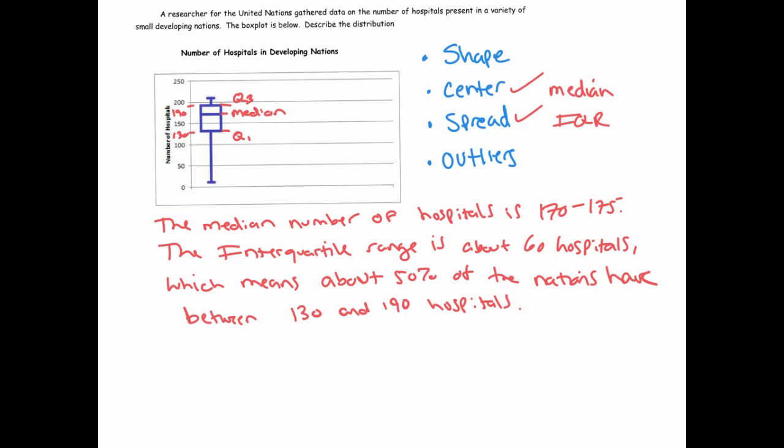Let's talk about the shape. It looks like this data is largely skewed left, based on that really low value there of about 10 hospitals. There might be an outlier country that just doesn't represent the overall trend of the data.